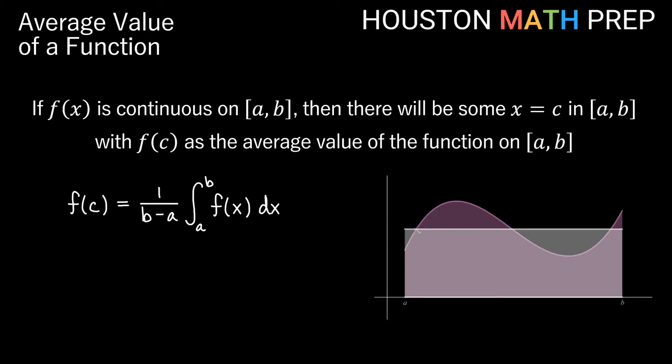And you can actually see there are three values in my picture here where my rectangle is the same height as my function, so there can actually be more than one x value in the interval a to b if your function is continuous that takes on that average value. It can happen multiple times.